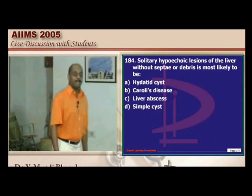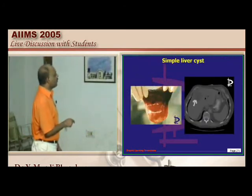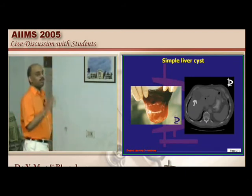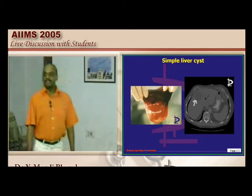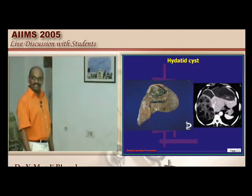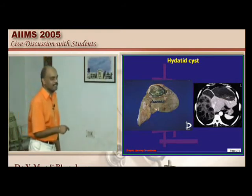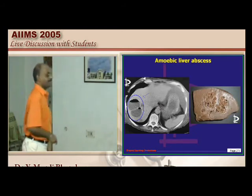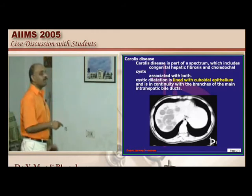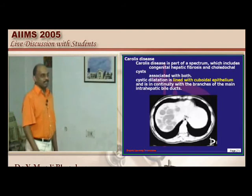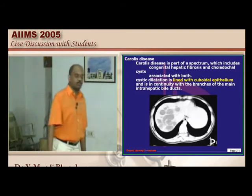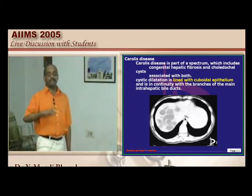A solitary hypoechoic lesion without septae or debris on ultrasound is a simple solitary cyst. A lesion with multiple septae — combined with the gross liver specimen — suggests a hydatid cyst. Fluid levels with septae indicate an amoebic liver abscess. Multiple cysts in the liver suggest Caroli's disease — congenital hepatic fibrosis with cystic dilatation lined by cuboidal epithelium, which is also multiseptate.